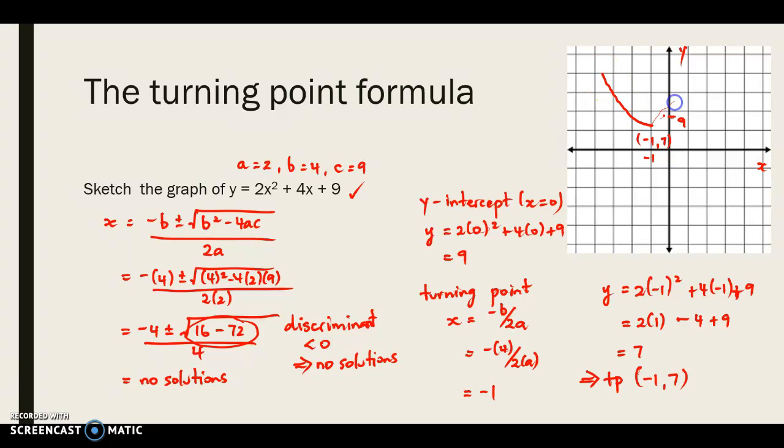You will notice here that we have a happy graph. Because looking at our original equation, the coefficient of the x² term was positive. So we know we are going to have that cup-shaped graph or the happy graph. So in the absence of any x-intercepts, the use of the turning point formula allows us to locate the turning point, and together with the y-intercept we can now sketch our graph.